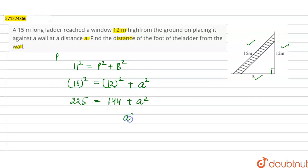So a square will be equal to 225 minus 144. Now 225 minus 144 will be equal to 81, so a square will be equal to 81.